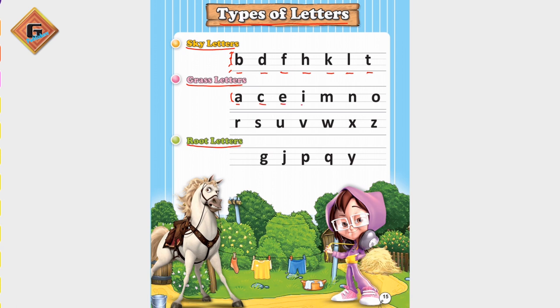E, I, M, N, O, R, S, U, V, W, X, and Z. So what are all these? These are grass letters.